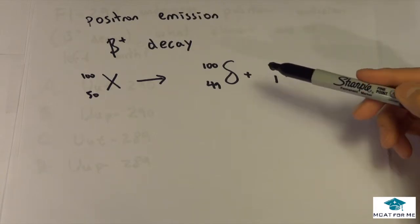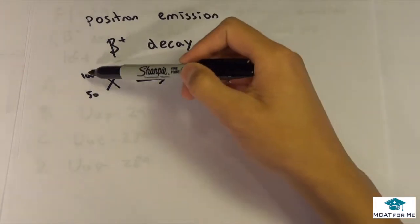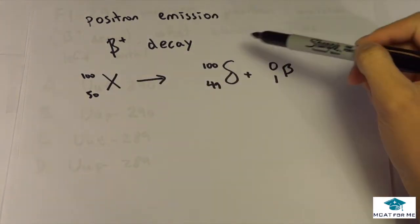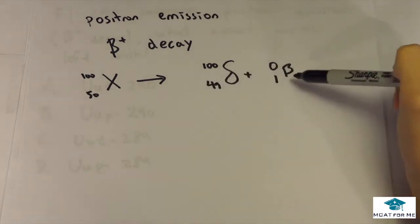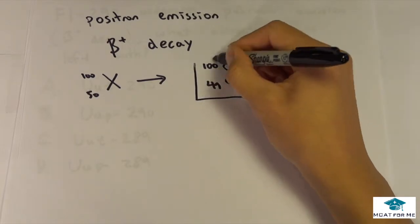And we notice that if we have to add up everything to equal that, so we want 100 on the top and 50 on the bottom, well we have 100 plus 0, that works, and 49 plus 1 which is 50, so that will work too. So our element will be this guy right here.